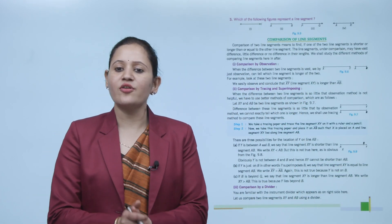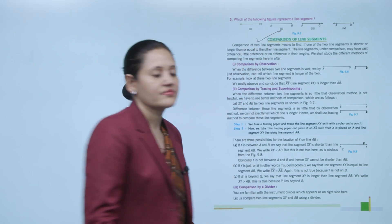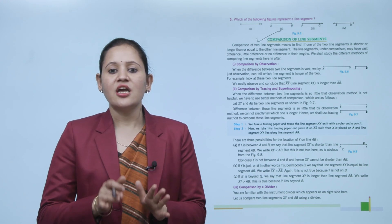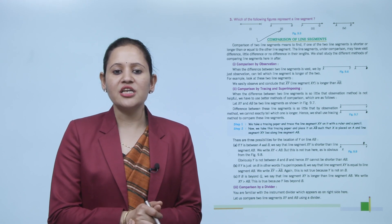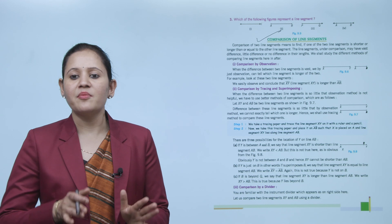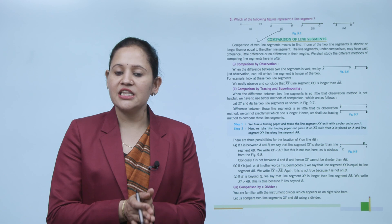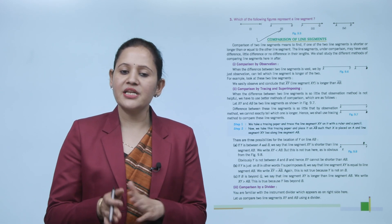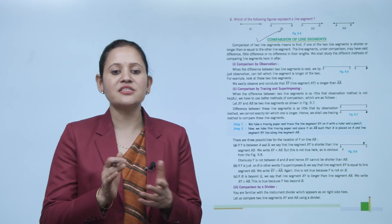Next is comparison of line segments. Comparison of two line segments means finding if one is shorter, longer, or equal to the other. The line segments under comparison may have a vast difference, little difference, or no difference in their lengths. We shall study different methods of comparing line segments. The first method is comparison by observation.